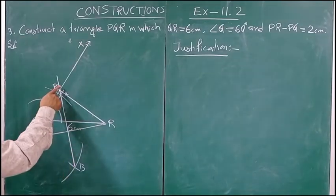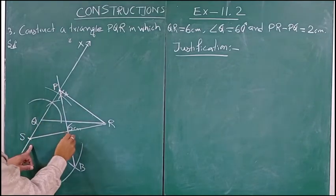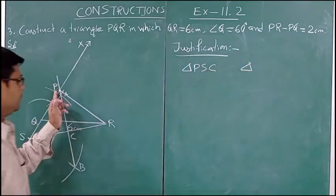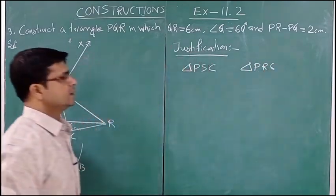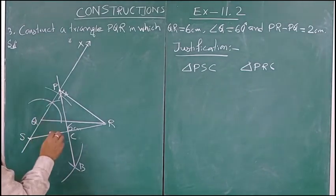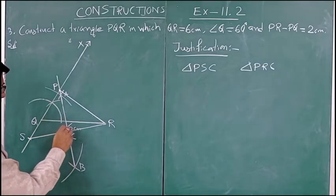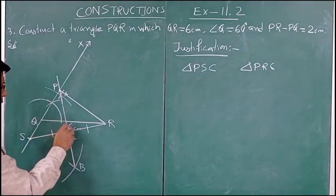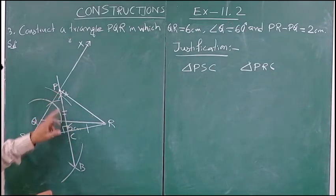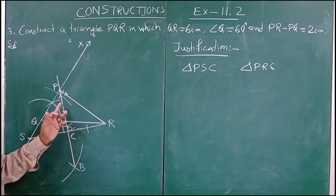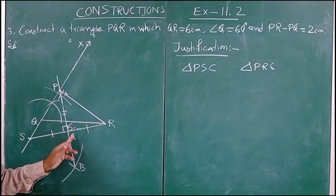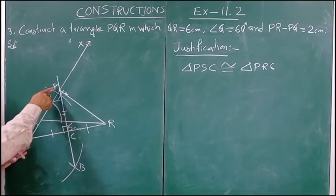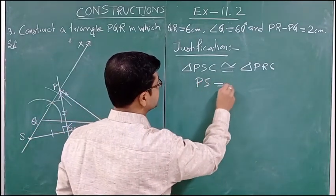For justification, we consider two triangles: triangle PSC and triangle PRC. We check whether these two triangles are congruent. Since AB is the perpendicular bisector of SR, we have SC equal to RC, and angle PCS equal to angle PCR equal to 90 degree, and PC is common. Therefore, triangle PSC is congruent to triangle PRC by SAS (side-angle-side) criteria.